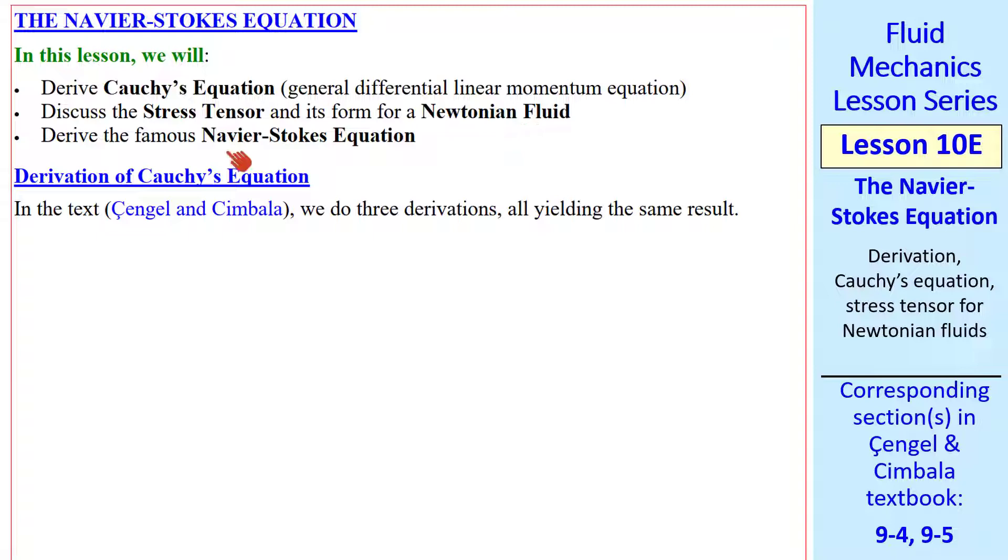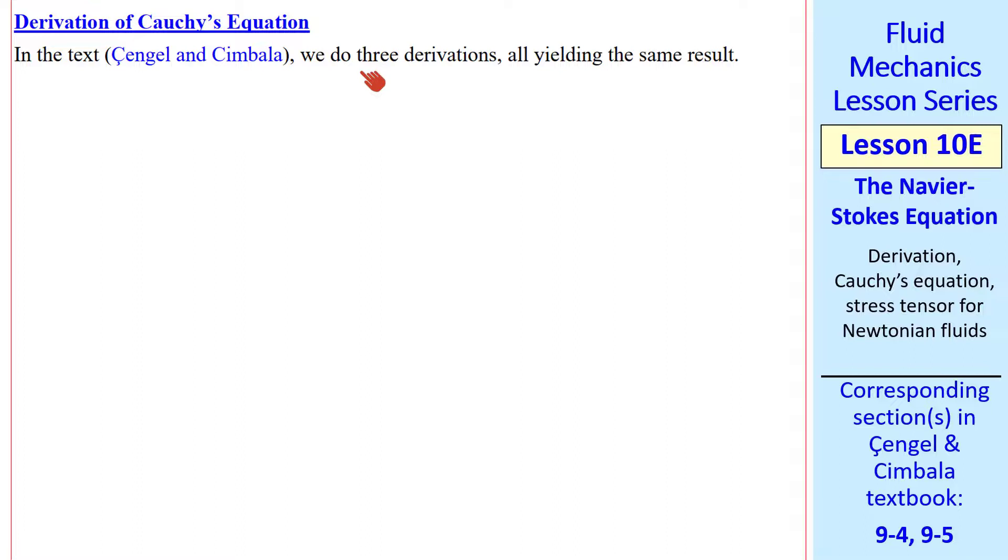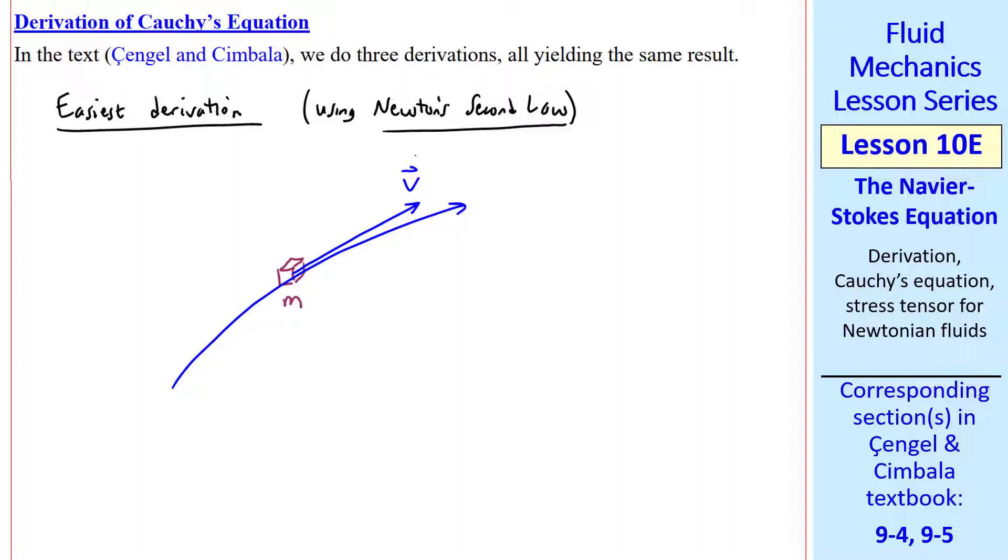In our textbook, we do three derivations of Cauchy's equation. Fortunately, they all yield the same result or we'd be in trouble. Here I'll do only the easiest derivation, which is the one using Newton's second law. Consider a small fluid element of mass m. This fluid element is moving with the flow, so there's some velocity of the fluid element v-vector. This is a streamline which may be curved as shown, but must be tangent to the velocity vector. We sum all the forces on this element, and then the fluid element has to accelerate in the same direction as sigma f.